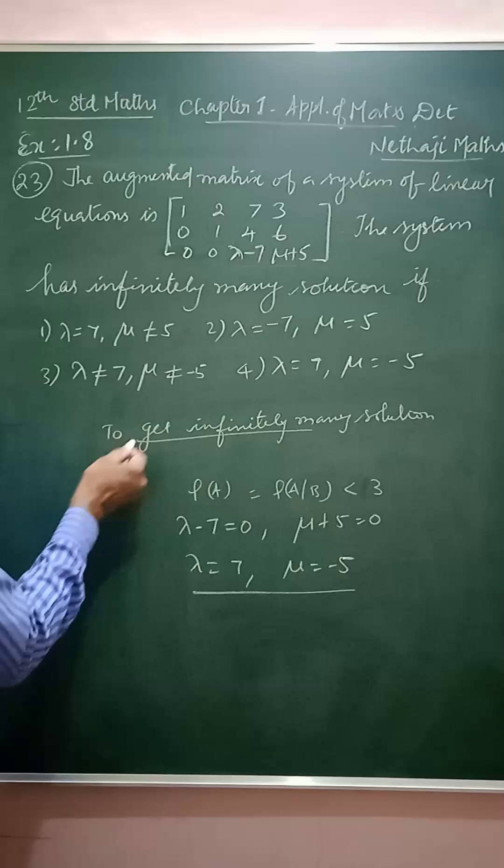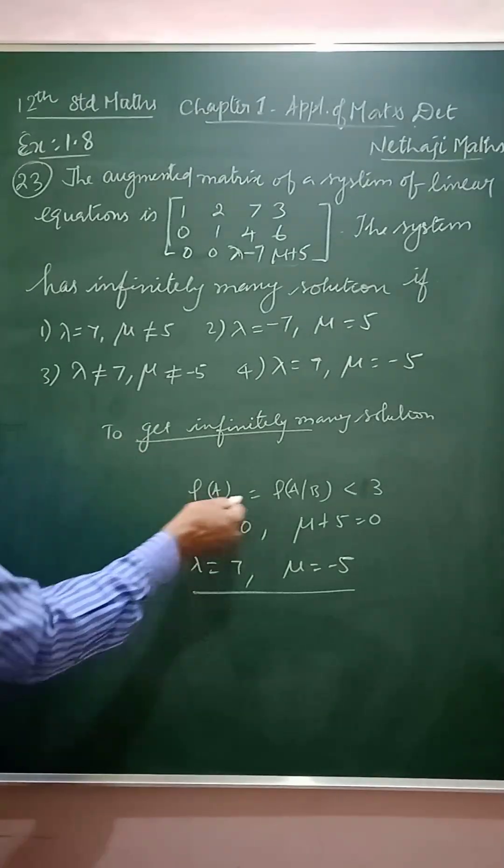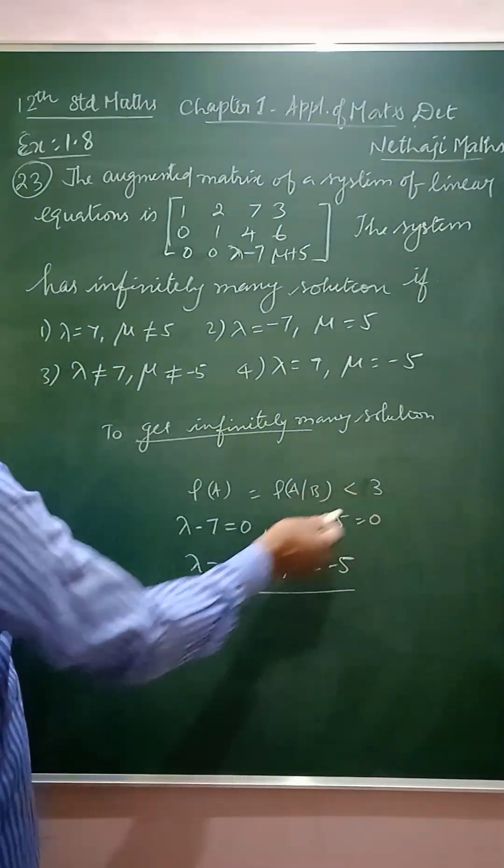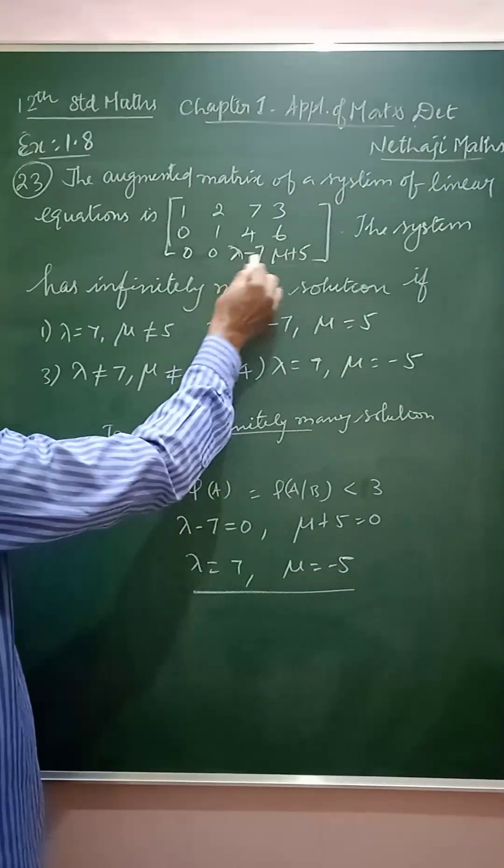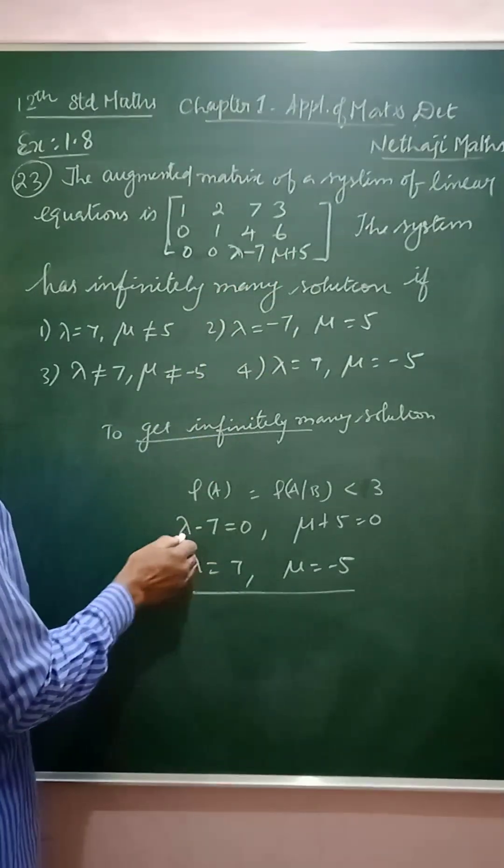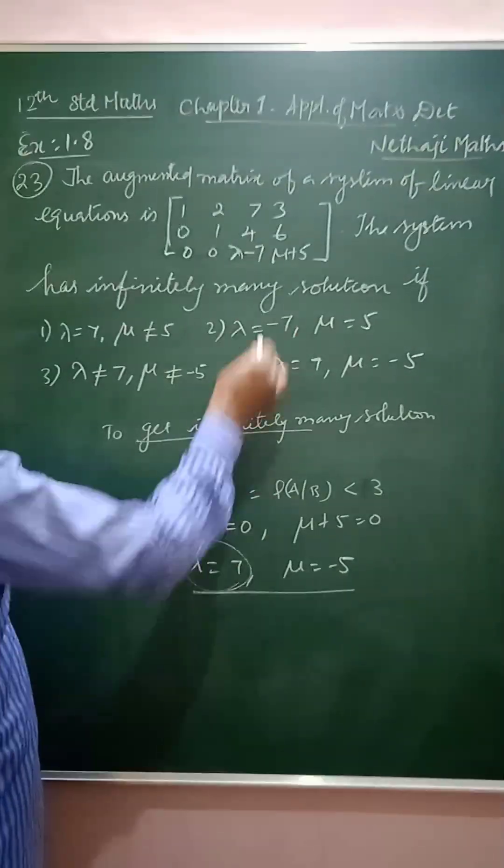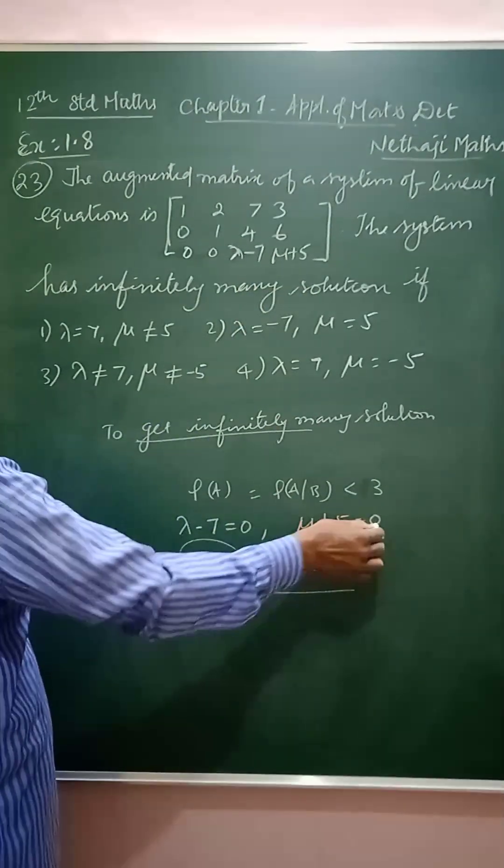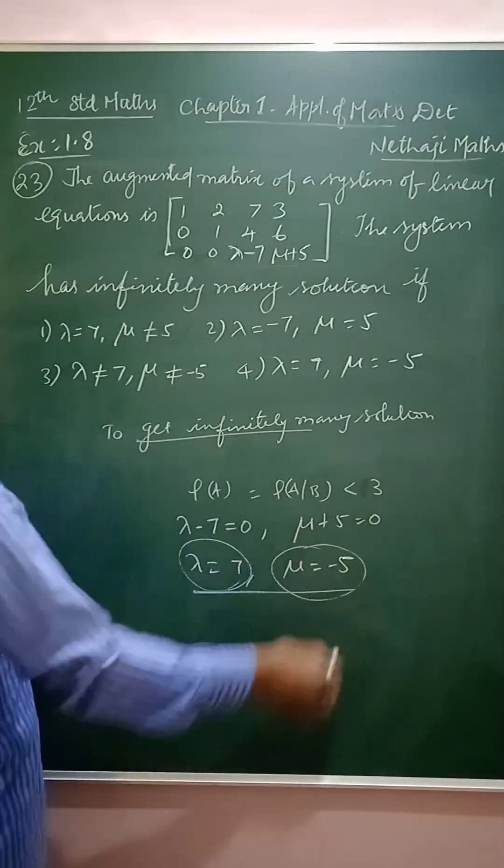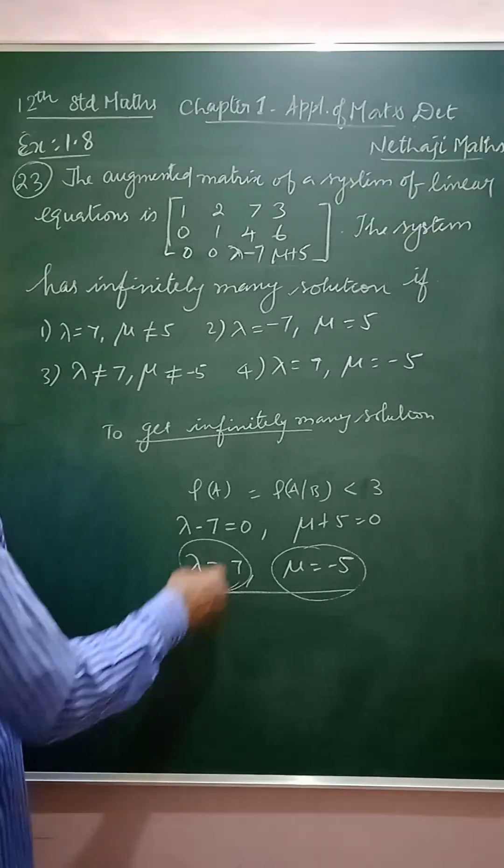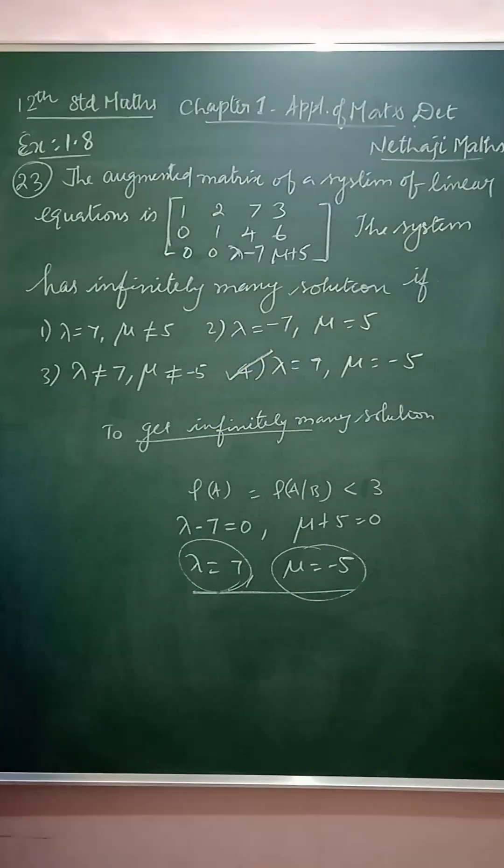To get infinitely many solutions, the rank of A and the rank of A augmented B must be less than 3. The last row elements should be 0. So lambda minus 7 equals 0, you get lambda as 7. If you substitute mu plus 5 equals 0, you get mu as minus 5. So which option is this? The 4th option is the correct answer.